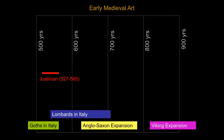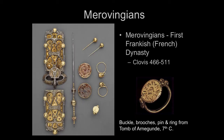Instead of looking at what's happening in the North Countries and the British Isles, we're going to look at what's happening in France and the continent. What's happening there is a group we call the Merovingians — the first Frankish dynasty. The Franks, who become the French, are a Germanic tribe that moved in. The founder is Clovis. He conquers this region, converts to Christianity, and is gone by 511.